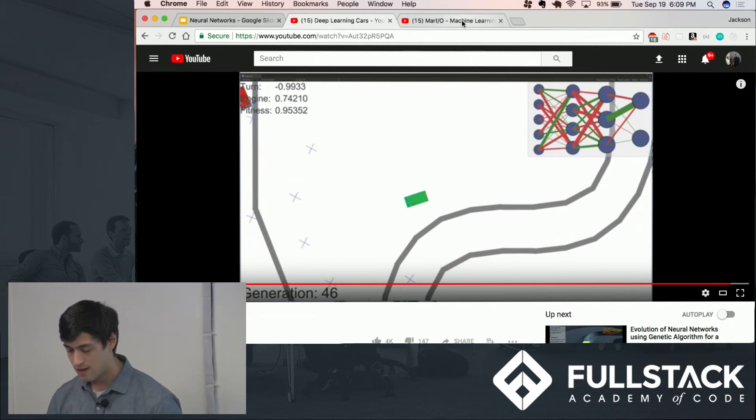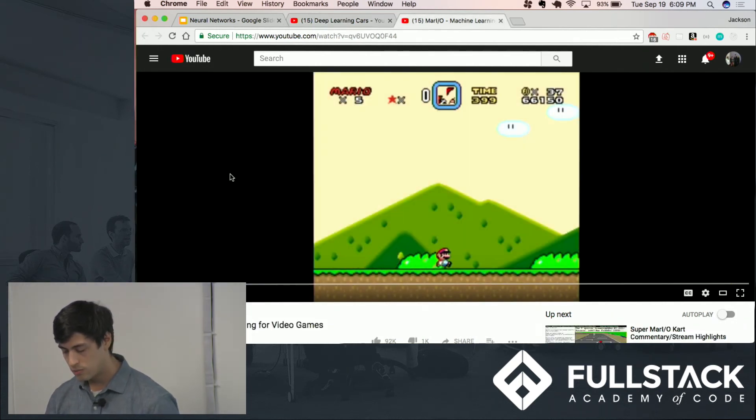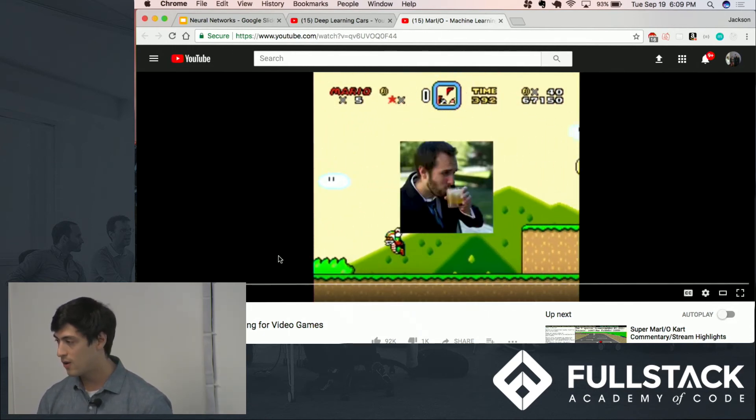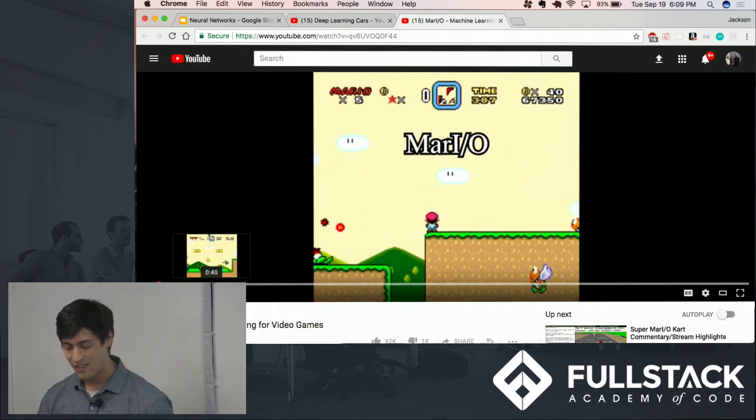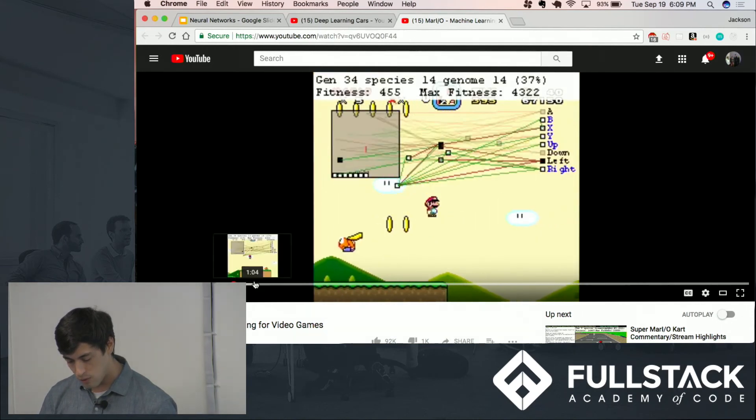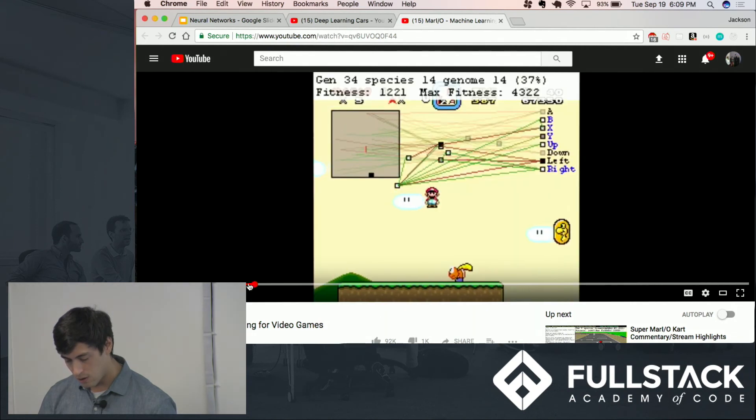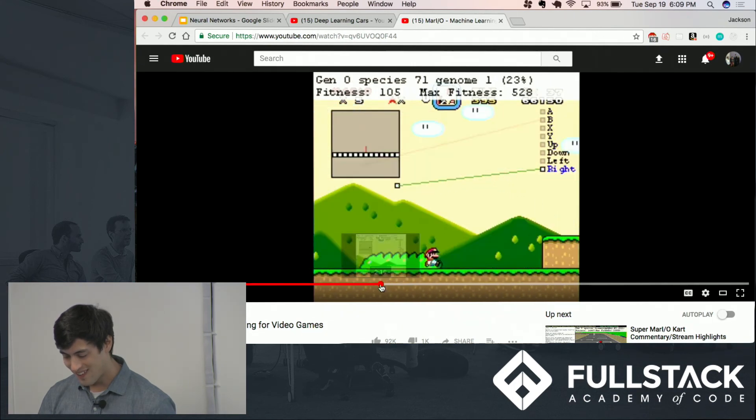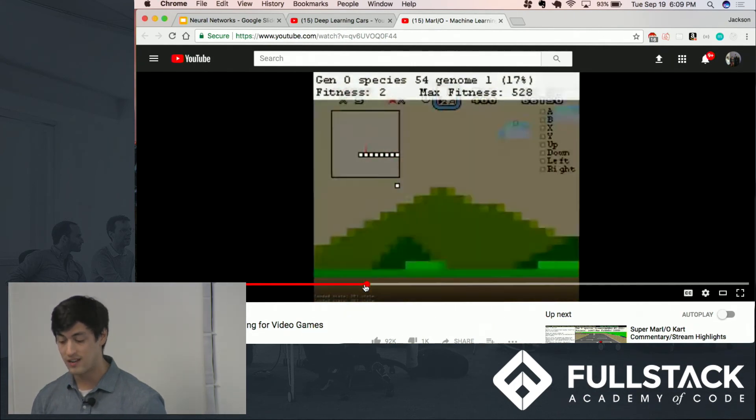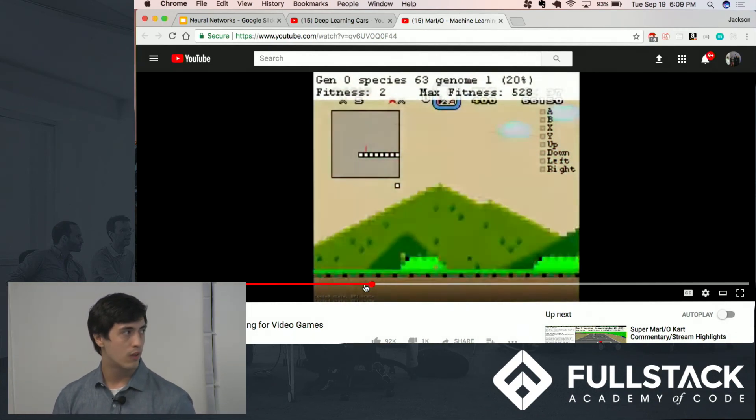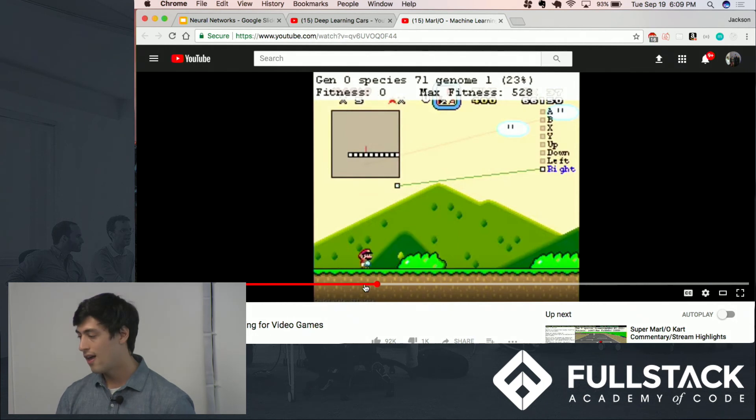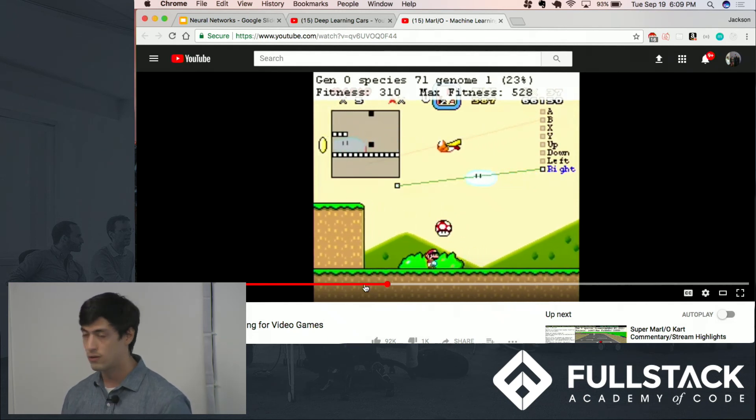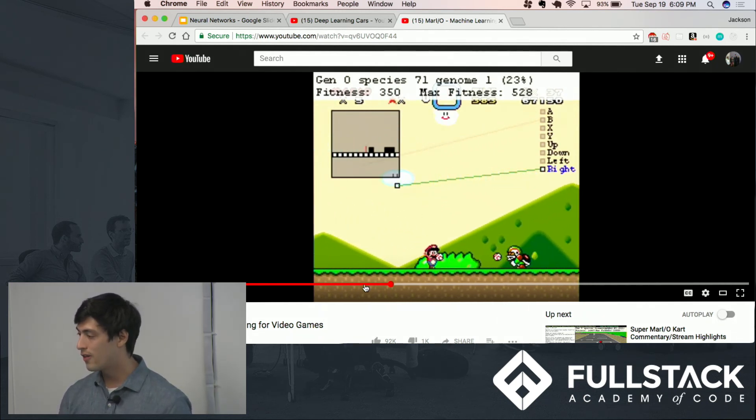I think even cooler than that, someone built a neural network to play Mario. The first example here in the video is of the completed neural network. But if we fast forward to earlier on in the video, Mario starts off just standing there. The neural network doesn't even know that moving right will cause Mario to get farther in the level. Fitness is measured by how far he's able to go. And so once they do figure out that moving right is a good thing, the neural networks will continue to do that.